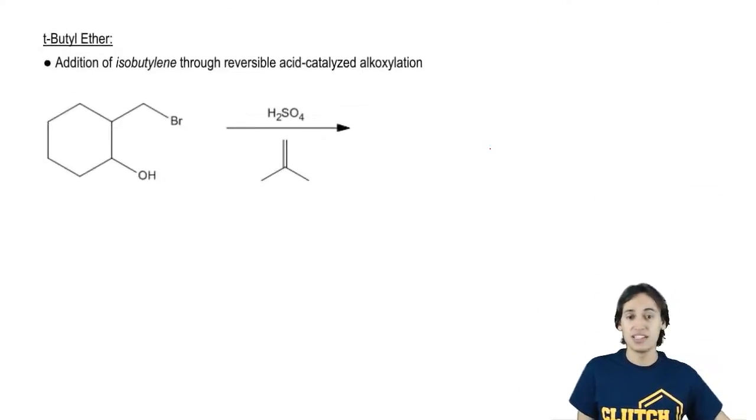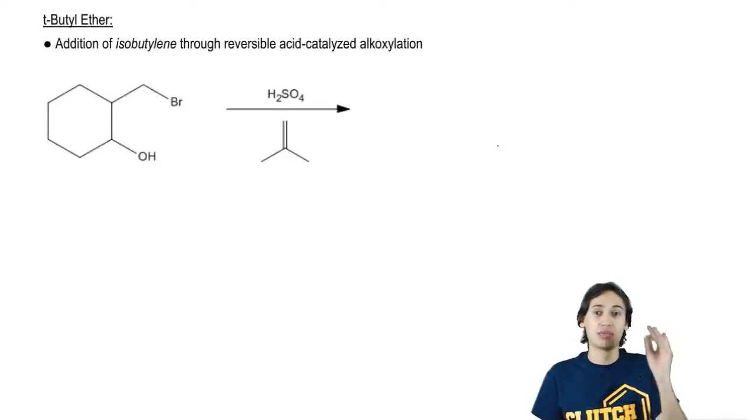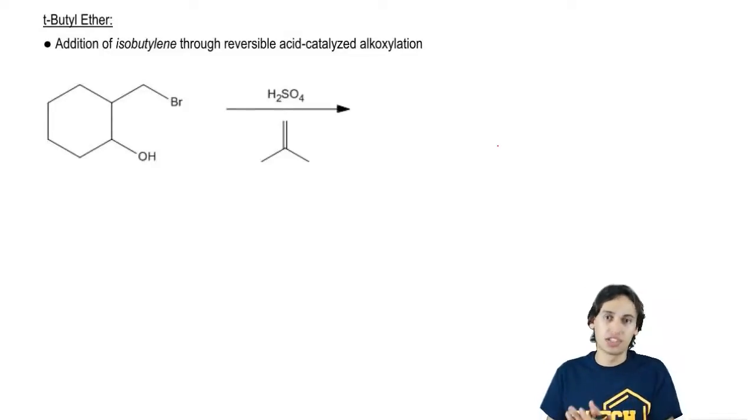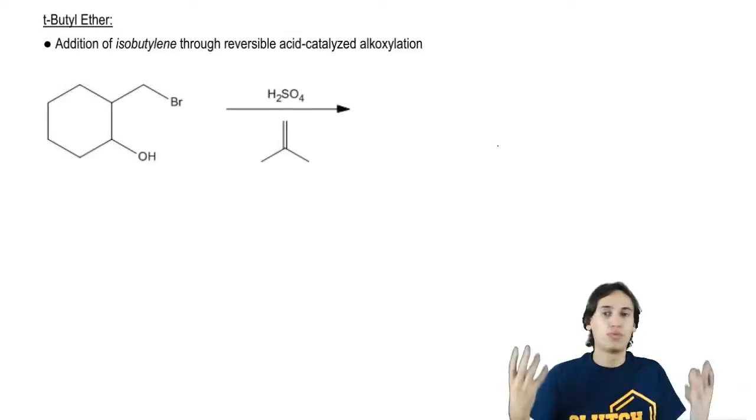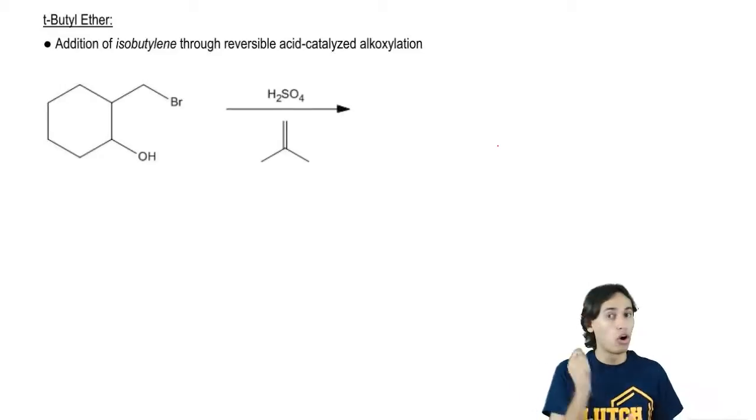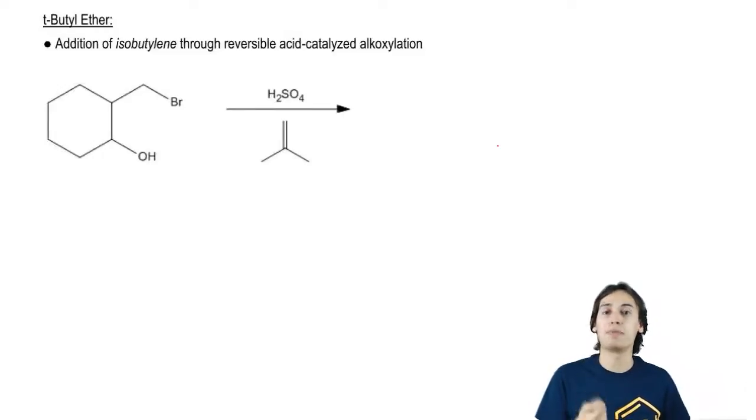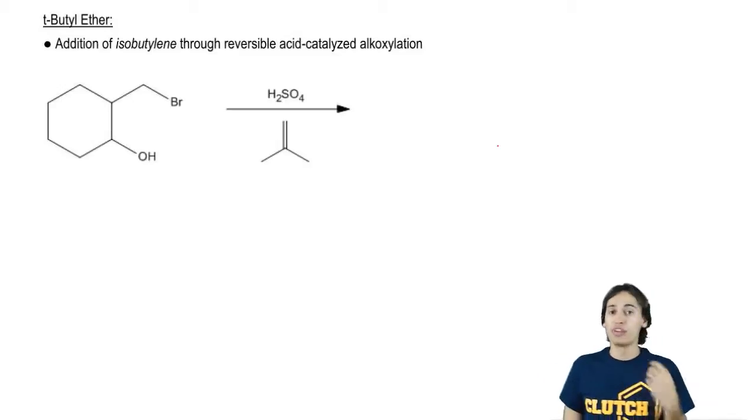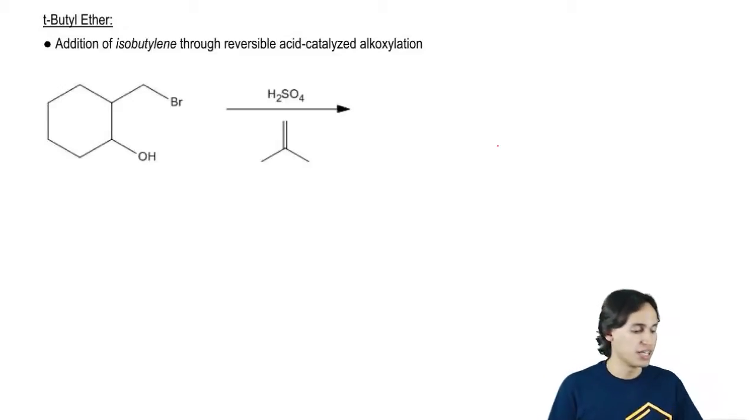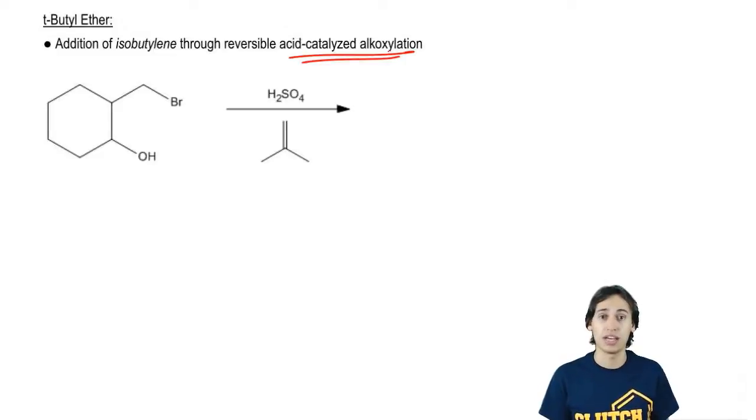Now what this does is it adds an ether to the oxygen making it unreactive. Because if you guys remember or if you guys just – we've learned about functional groups in the past. Alcohols participate in a lot more reactions than ethers do. So what that means is that if I can turn my alcohol into an ether, it's going to be protected as long as it is an ether. Now the reaction that we usually use for this is an acid-catalyzed alkoxylation.